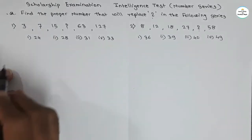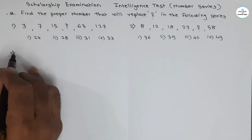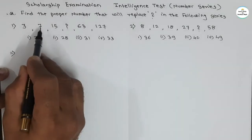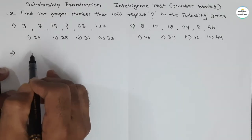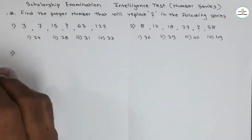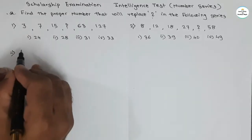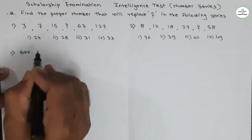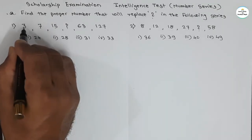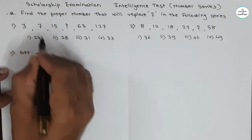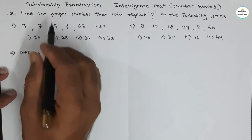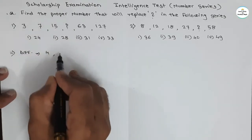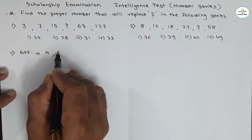There are 4 options. We will start our solution. The first number is 3, the second number is 7. If we find the difference between these numbers — 3 to 7 — the difference is 4. Now, 7 to 15, the difference is 8.